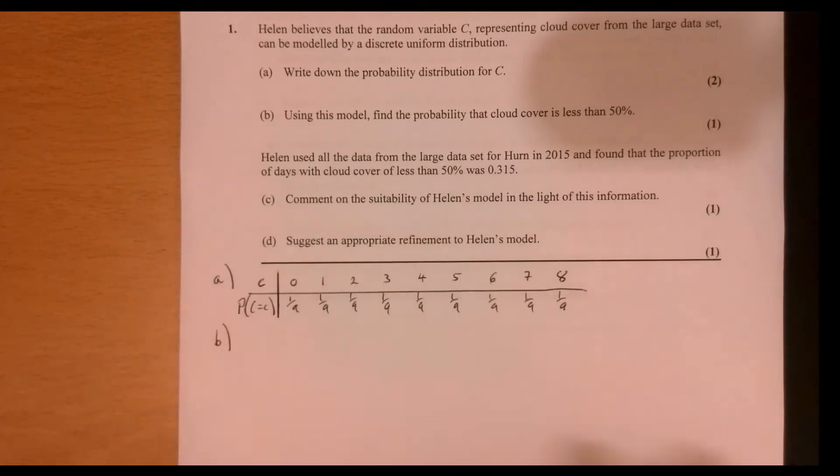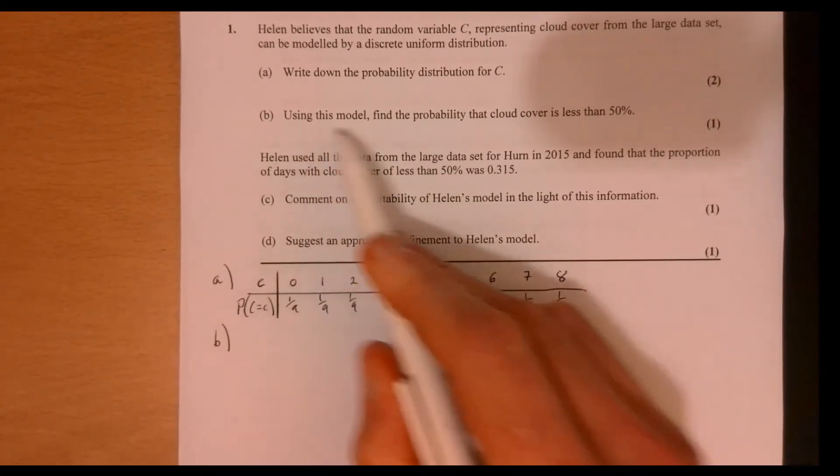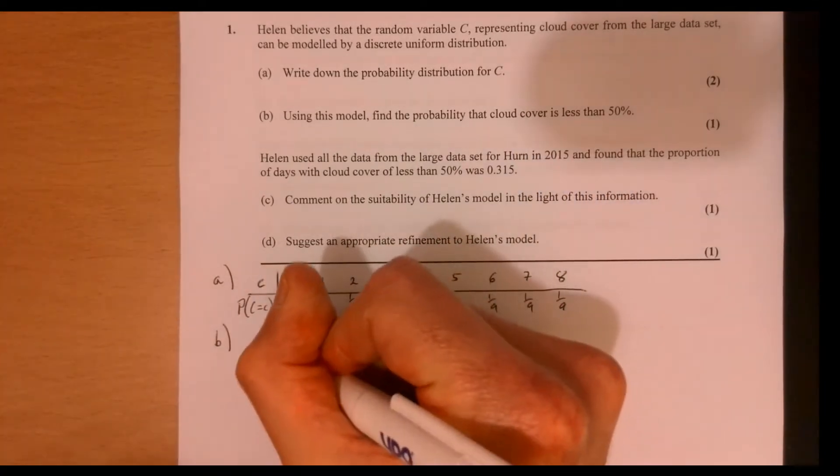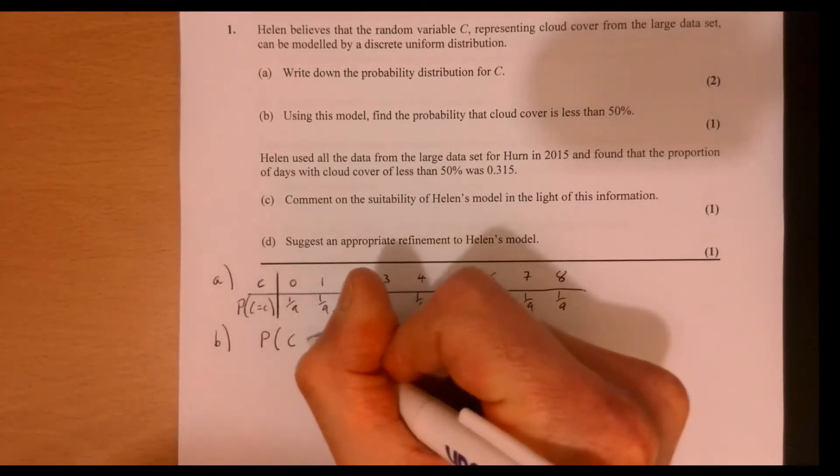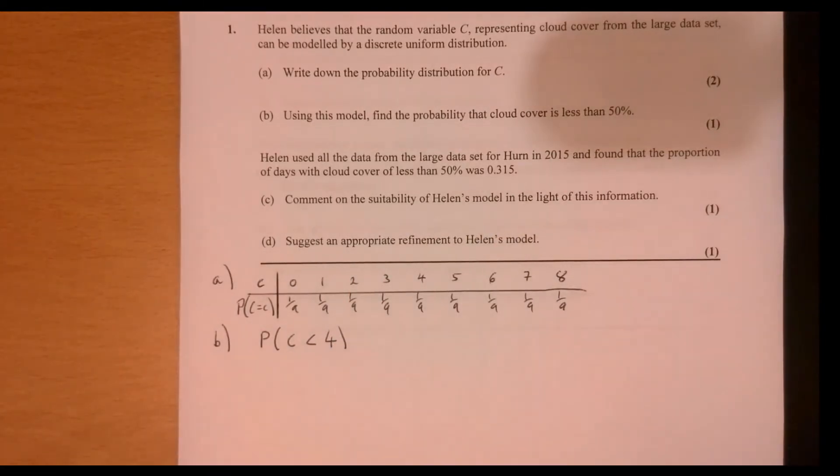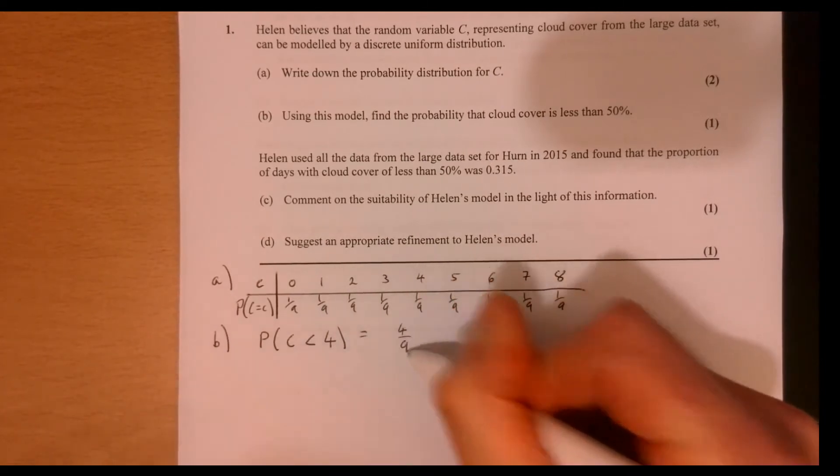Now, part B is easy. As it says, using this model, if you've got this bit done, part B is simple. Find the probability that cloud cover is less than 50%. So in other words, what's the probability that the cloud cover is less than 4? Because 4 is 50% of 8. So that's equal to 4 over 9.